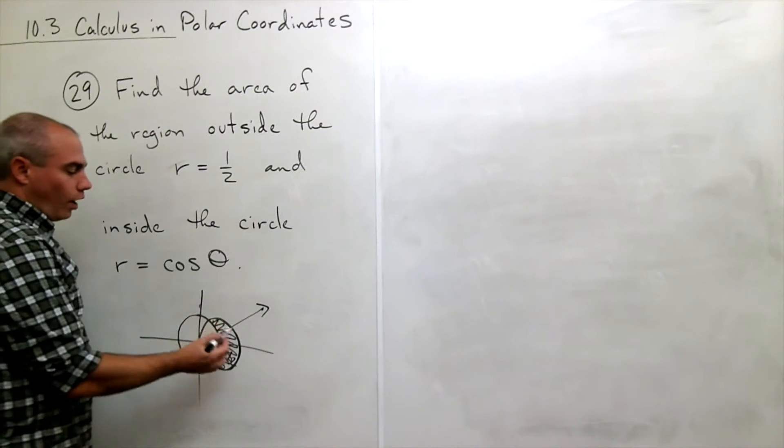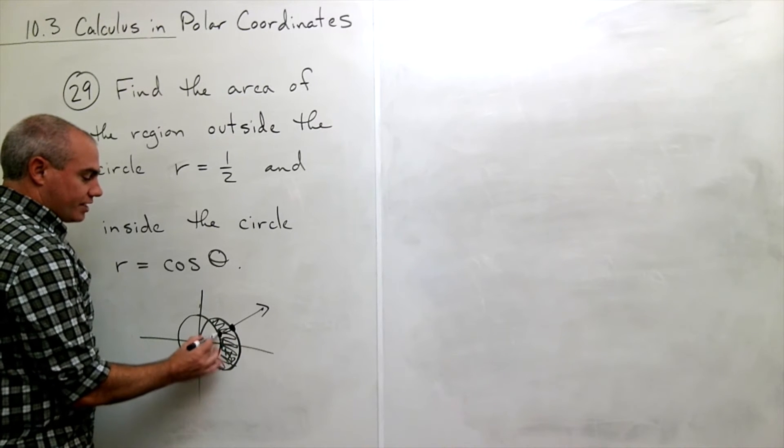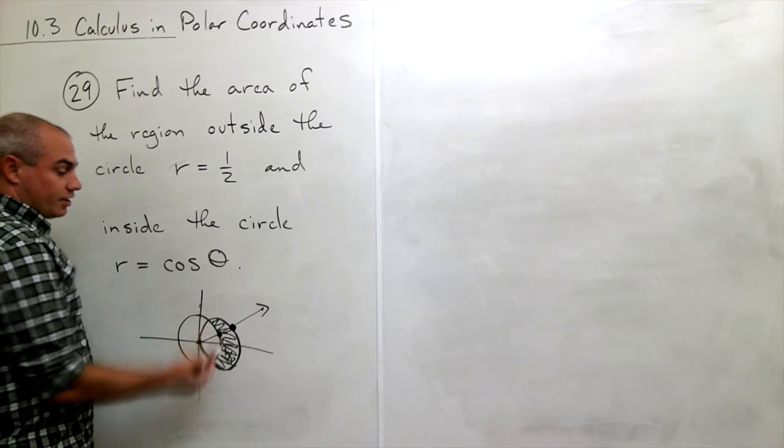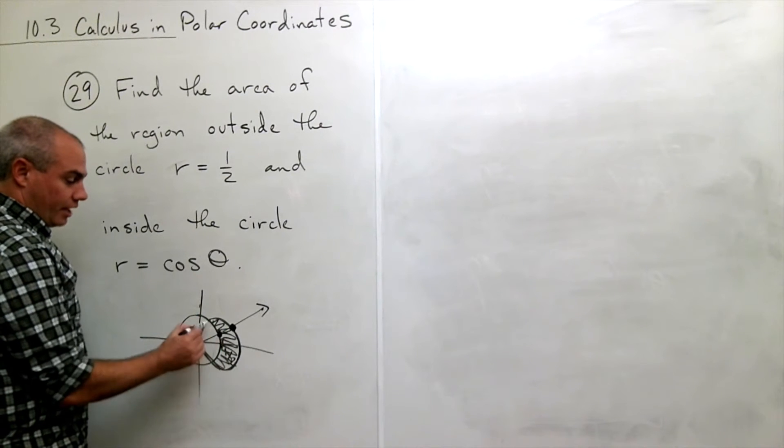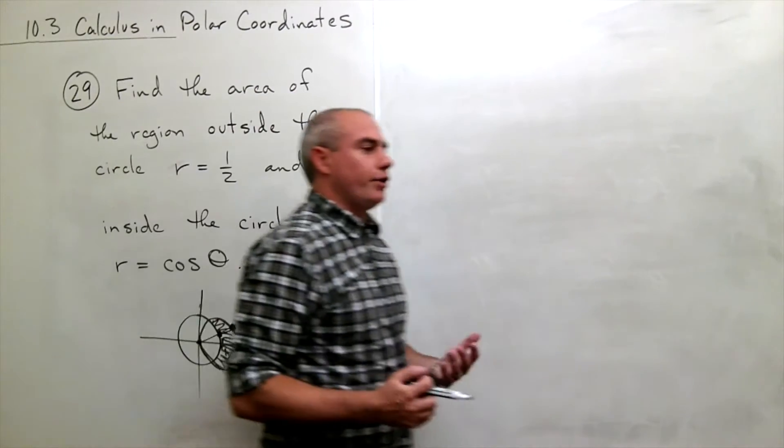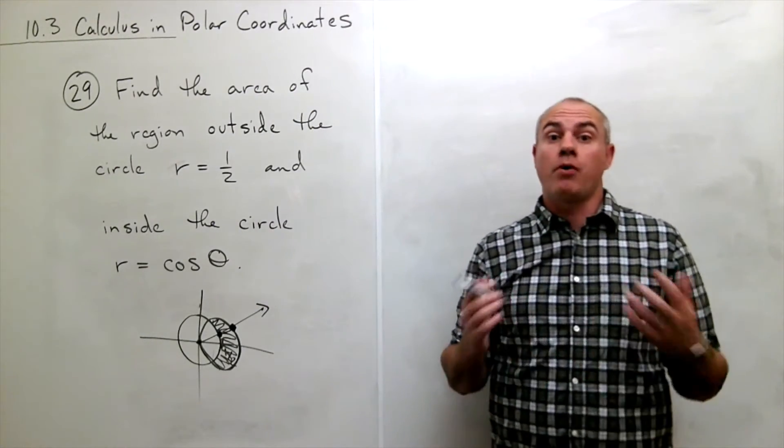I notice that one of the functions is the outside function and one of the functions is the inside function. Or you could think of it as this is the top function and this is the bottom function. So really all that we're doing here is we're finding the area between two polar curves.